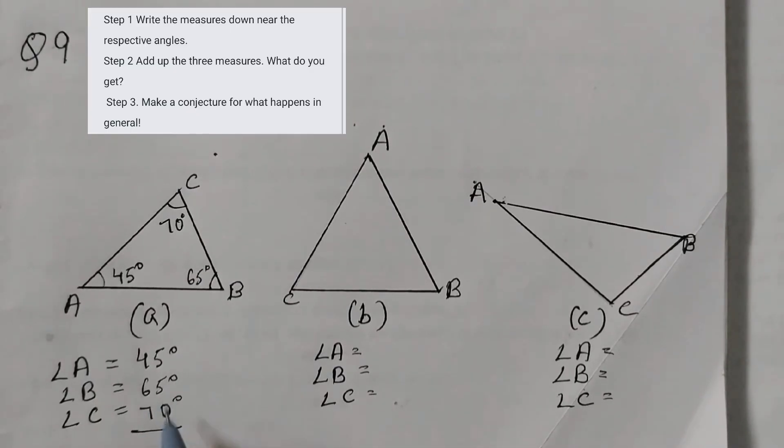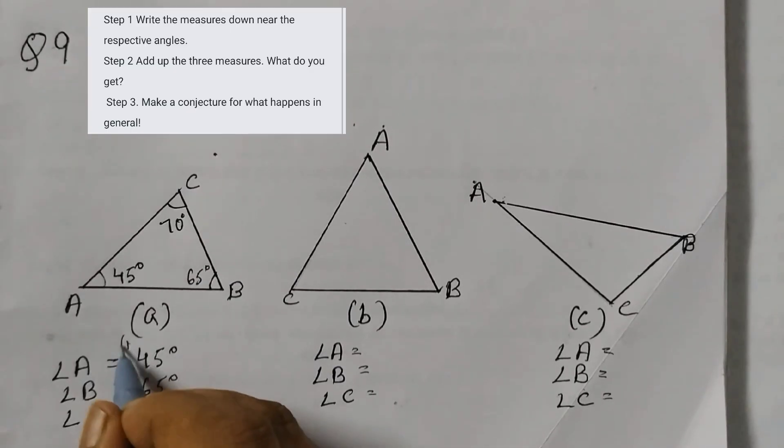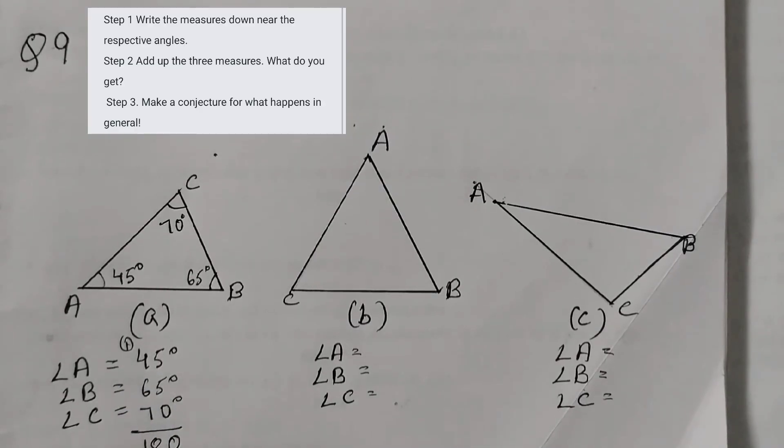Next step add these three. 5 plus 5, 10. 6 plus 4, 10. 11, 7. We get 180 degrees.